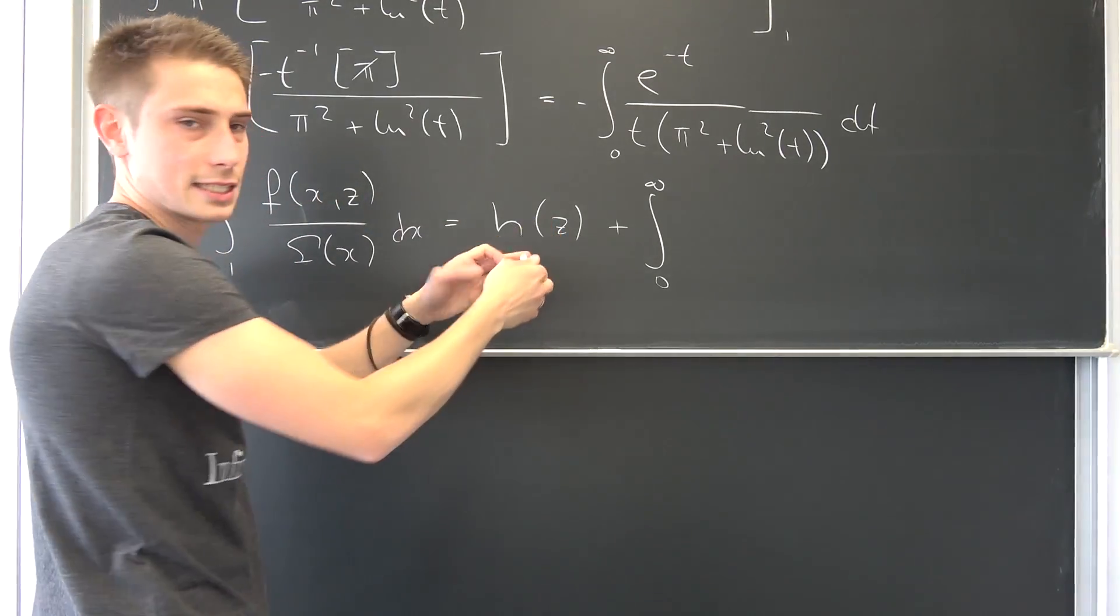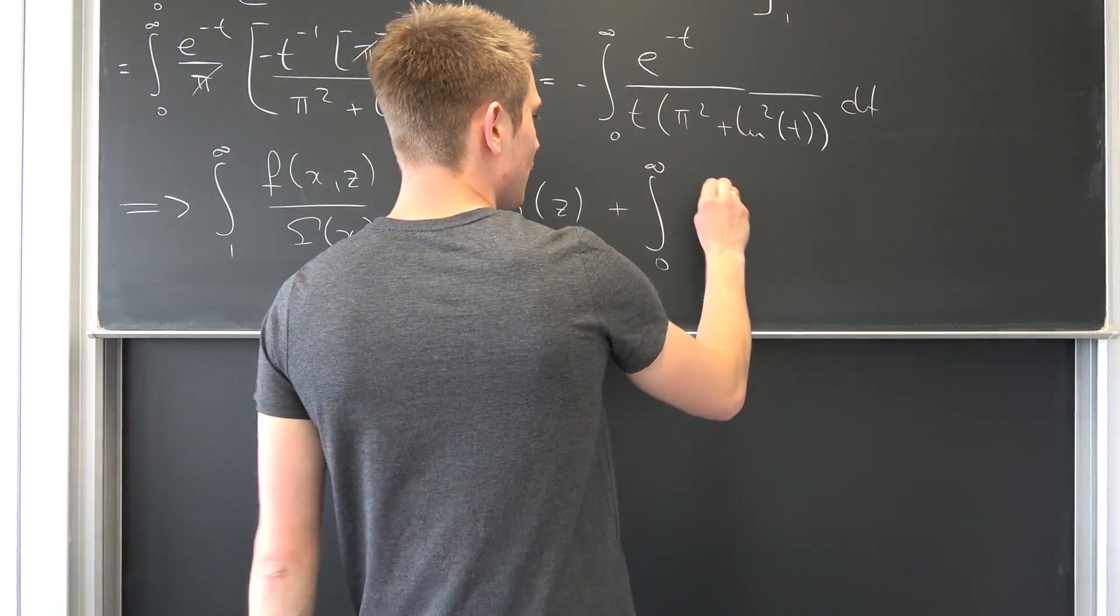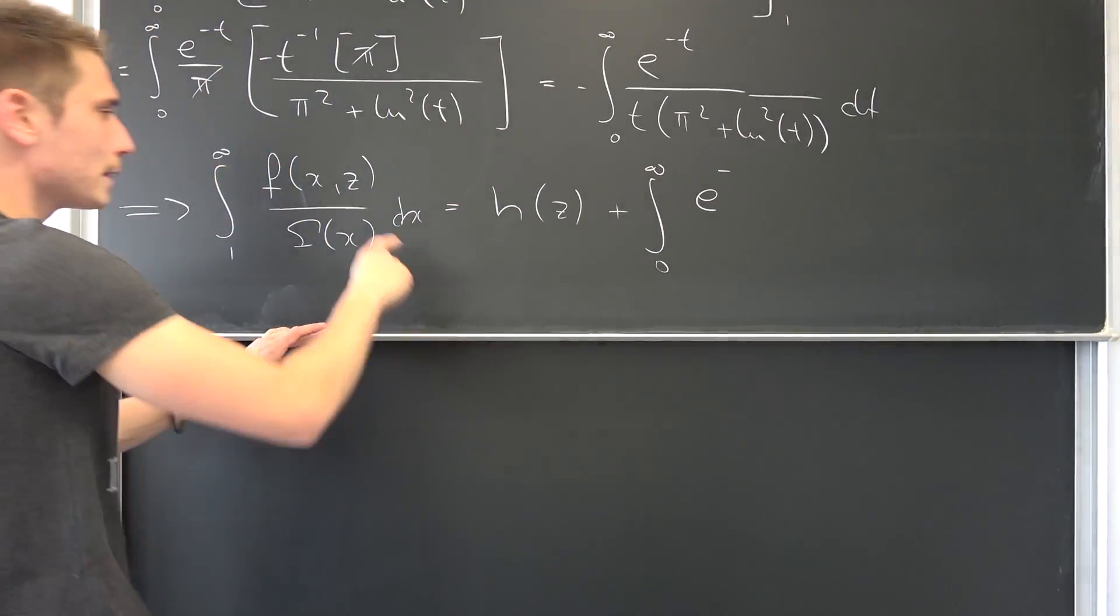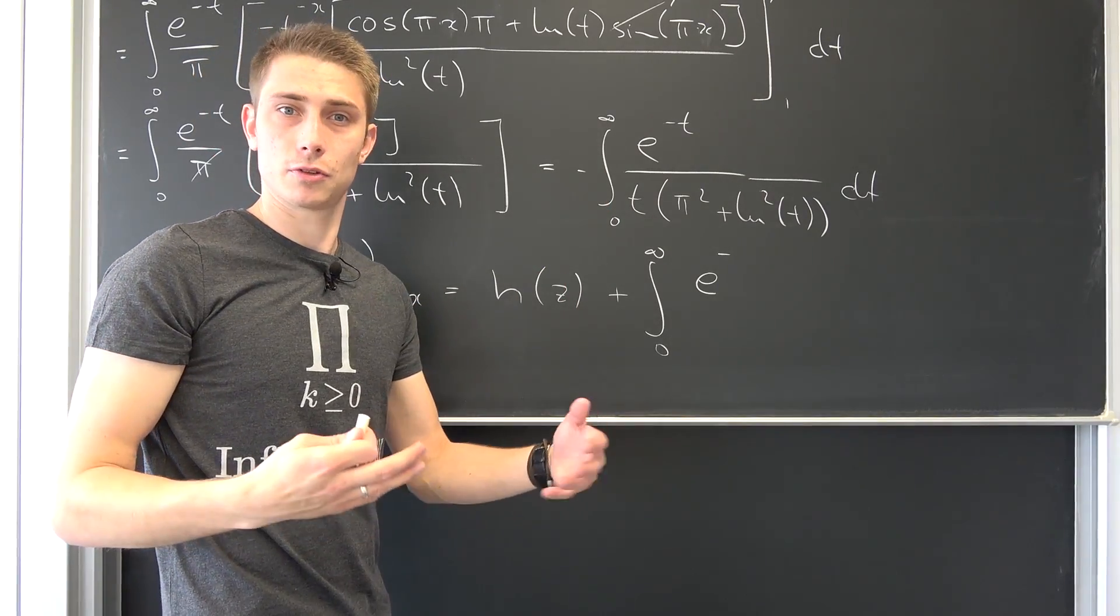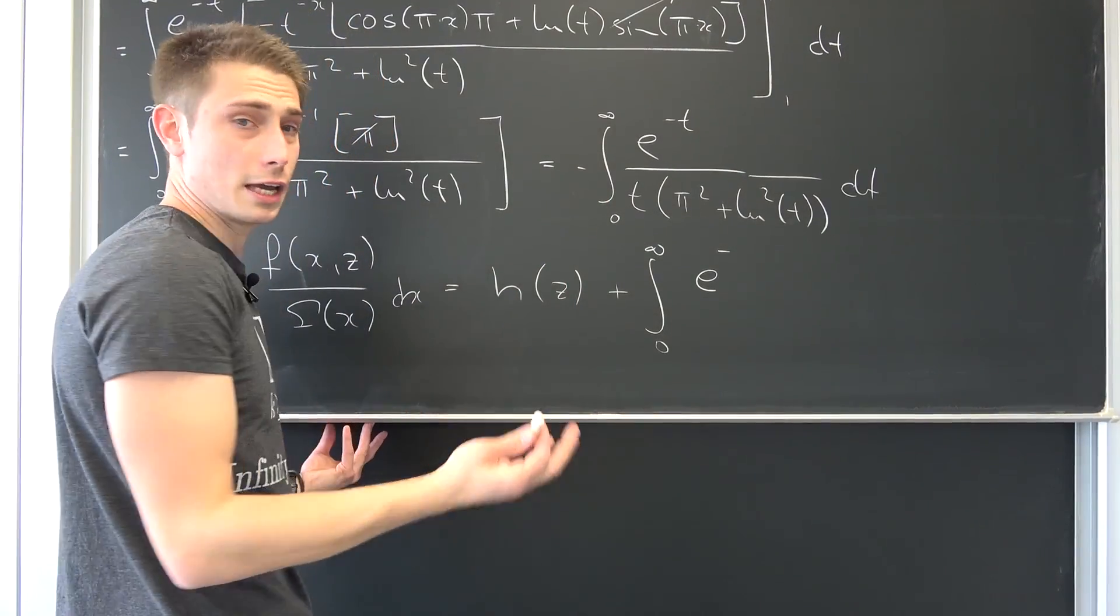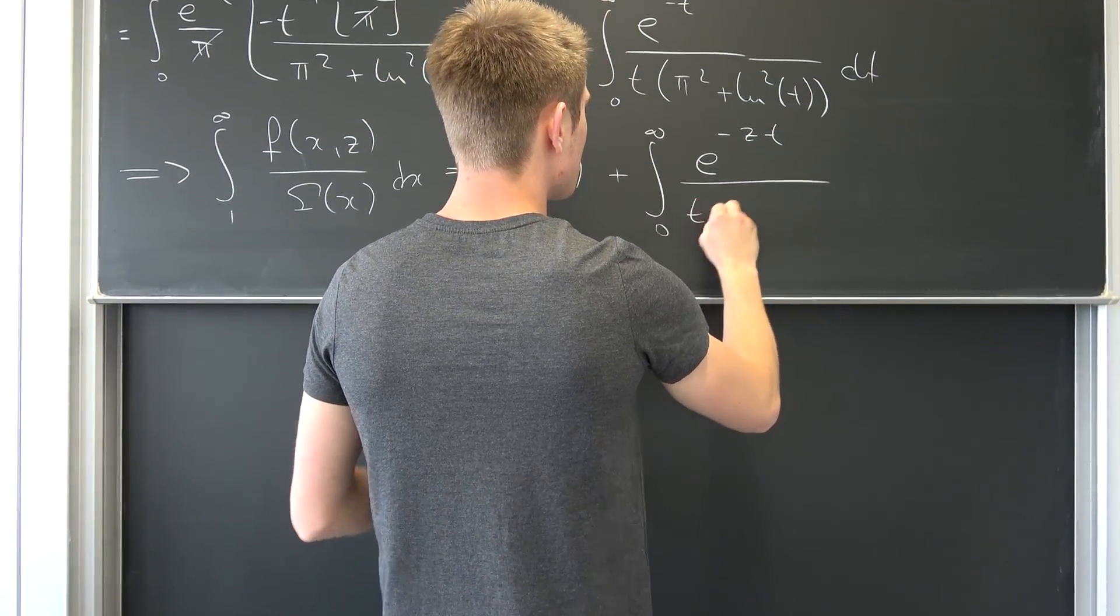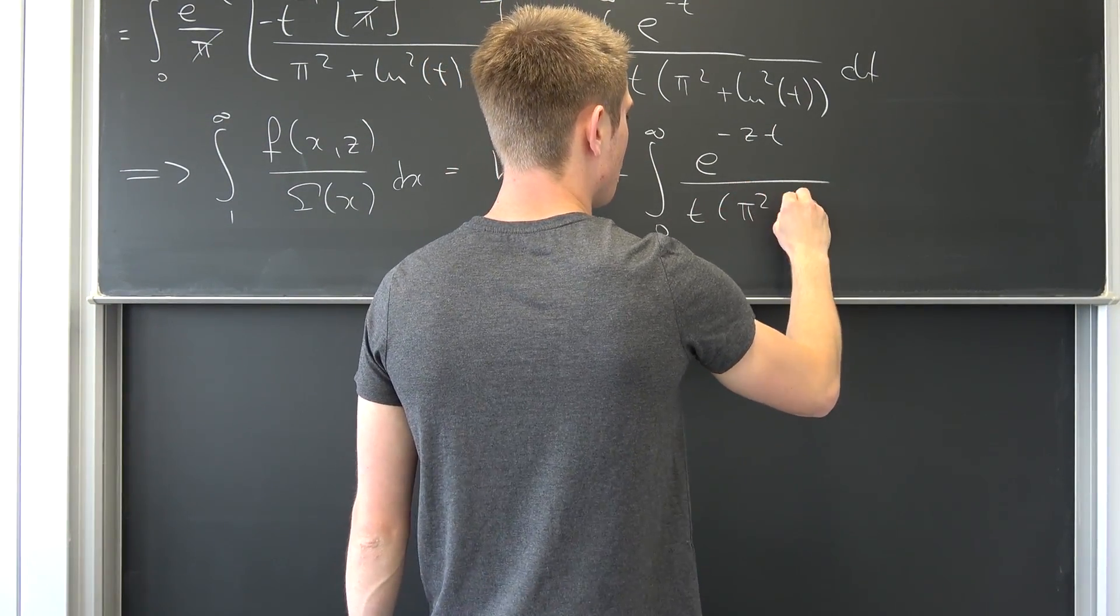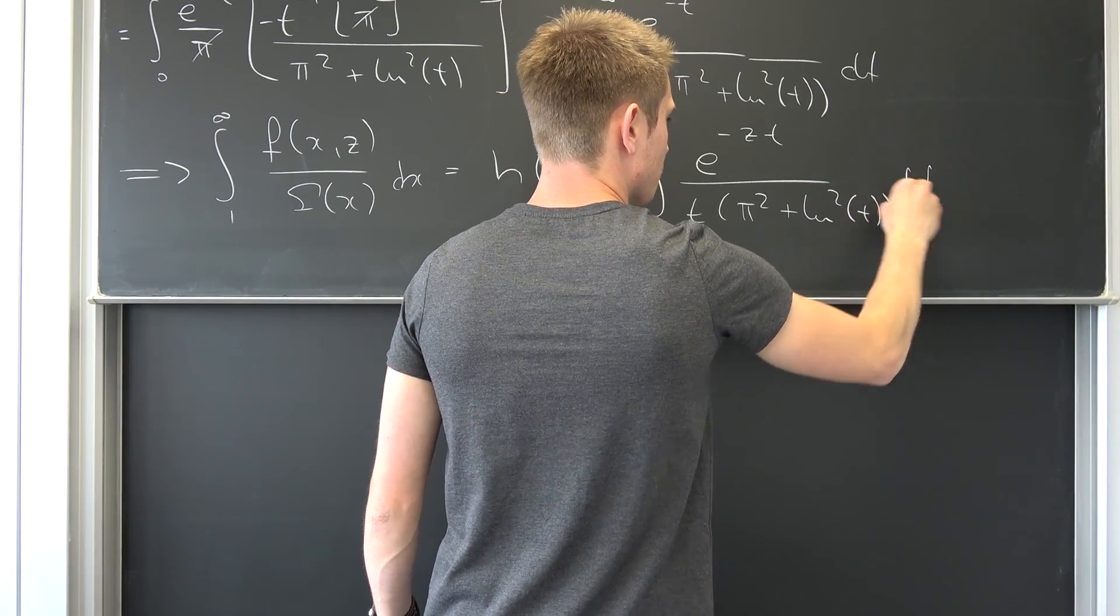Then you are going to get a negative sign here and here and it's going to work out somehow, it really doesn't quite matter for this problem at the moment. And then e to the negative, why not parameterize our exponential function? That's a commonly used trick. I have used it before on this channel. z times t over the stuff we have right here: pi squared plus natural log squared of t, integrated with respect to t.